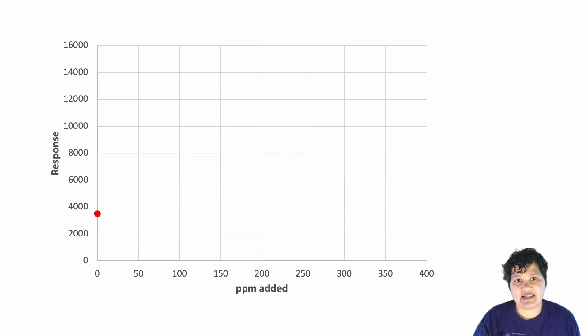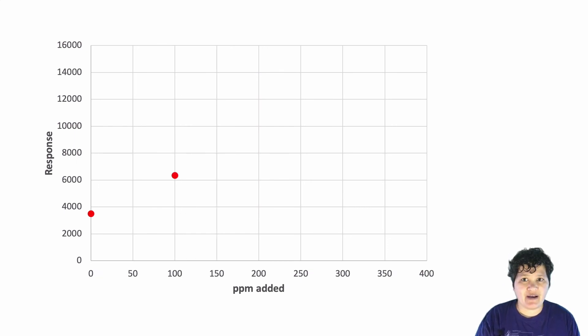So let's look at an example. So here we have just run an unaltered sample and we have graphed its response. Because we did not add any analyte to this, we put it at zero on the x-axis. We then take a sample and add a hundred parts per million of analyte to it. And we add the instrument response to that spiked sample to our graph. Now I'm going to do this twice, once with a sample with 200 parts per million added and once with a sample with 400 parts per million added.